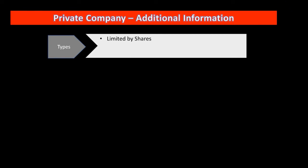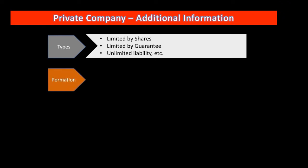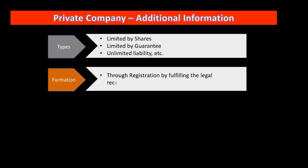The types of private company are: limited by shares — categorized by how much share you hold; limited by guarantee; and unlimited liability. Formation is through registration by fulfilling the legal requirements. Under the law there are certain provisions and procedures to follow, and it is comparatively very easy to form a private company.